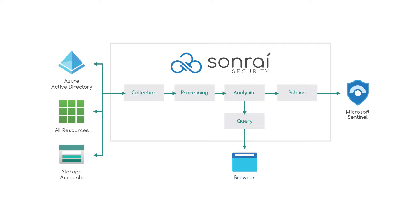Sunree's integration with Sentinel is super simple. First, Sunree ingests activity logs and API data from Azure, creating a graph of everything in your cloud and what's happening in it. Then we apply our analytics to that to expose risk, and then feed the resulting information back into Sentinel.